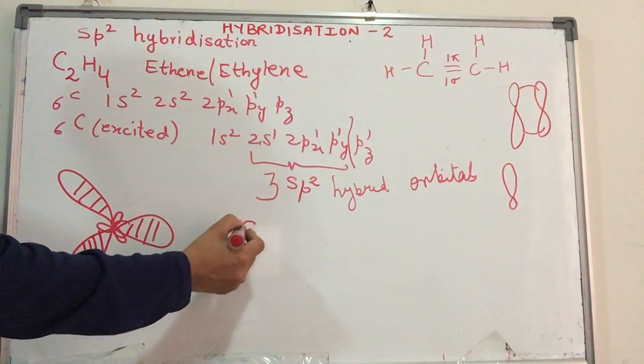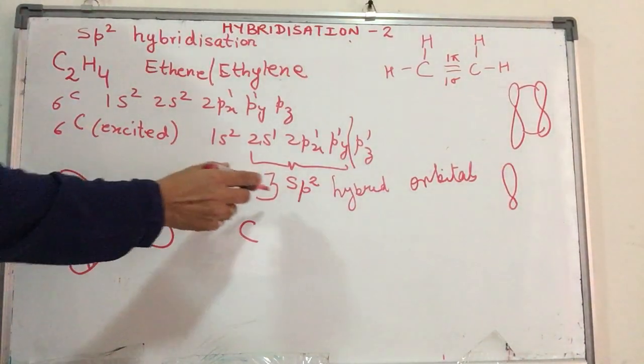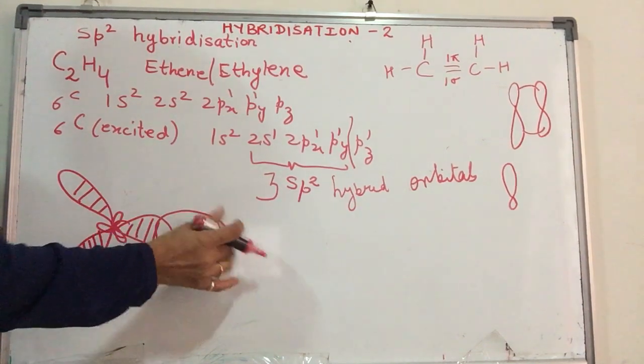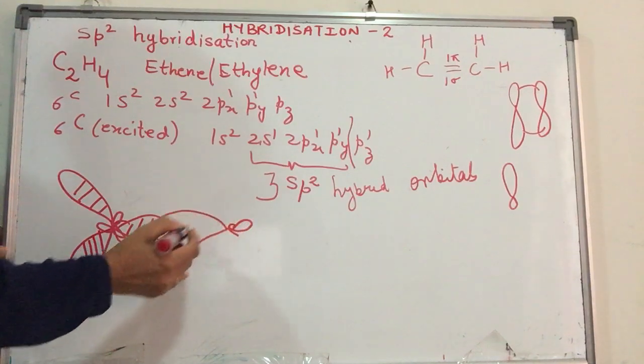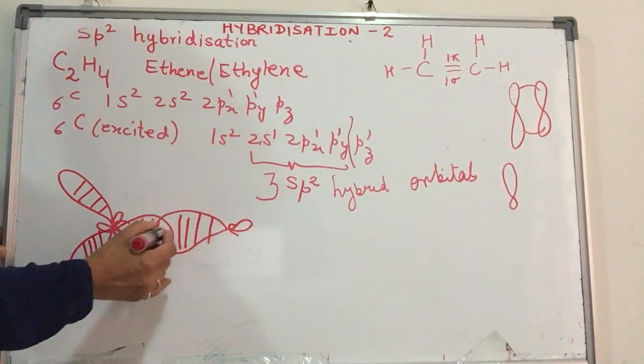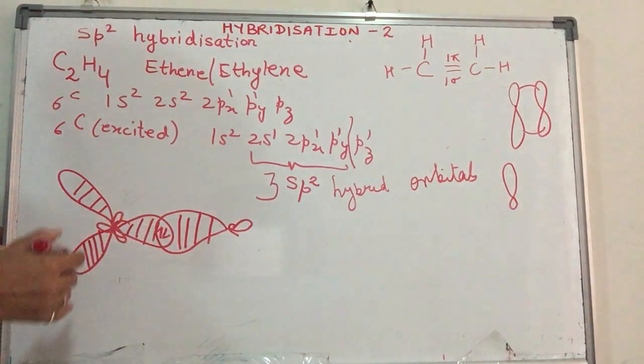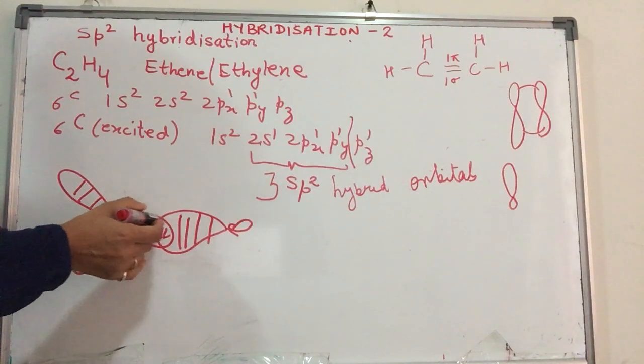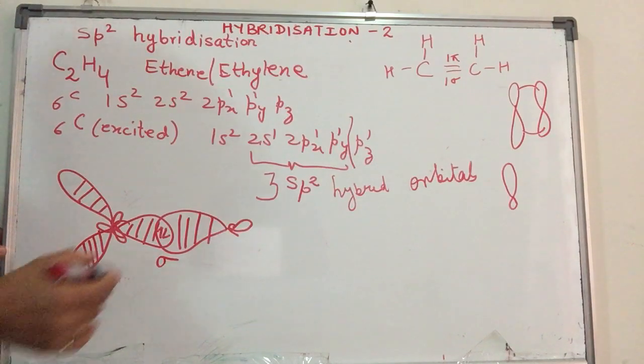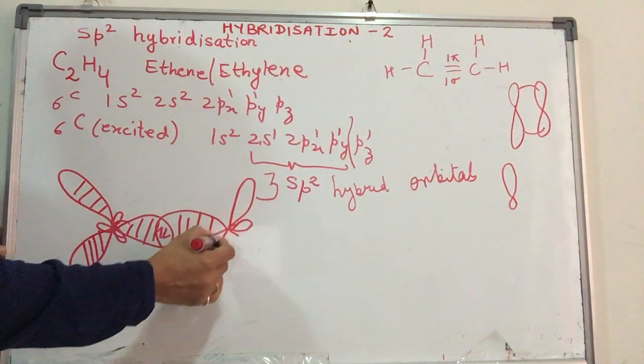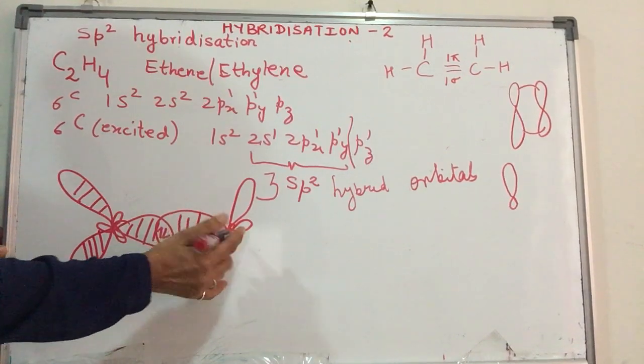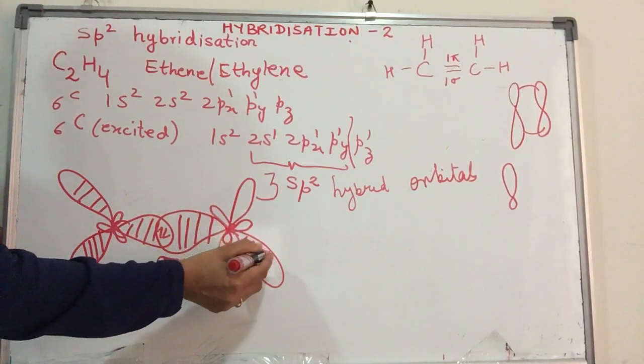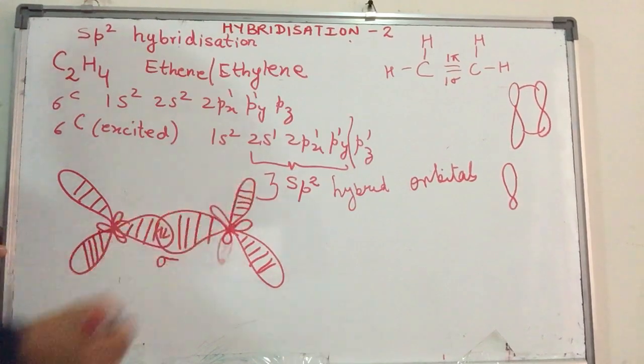Let me draw the second also. Now here, sp2 hybrid orbital of one carbon overlaps with the sp2 hybrid orbital of the second carbon atom, giving me an sp2-sp2 overlap. This is an sp2 hybrid orbital. sp2 hybrid orbital, they are overlapping head on. So this is a sigma overlap. This is my second, sorry, second hybrid orbital. And this is my third hybrid orbital of the second carbon atom. So we have here this one.